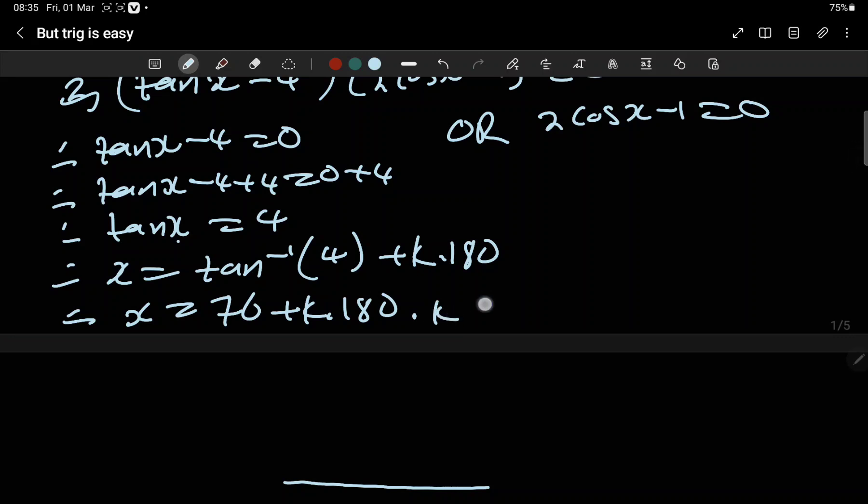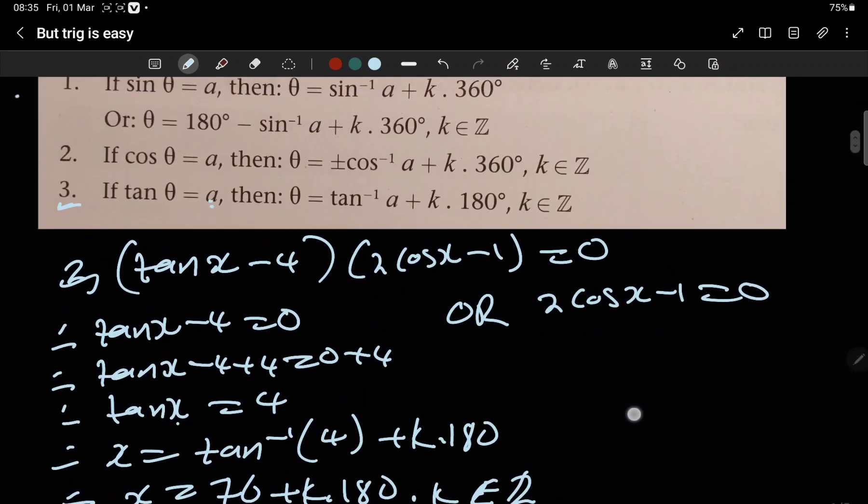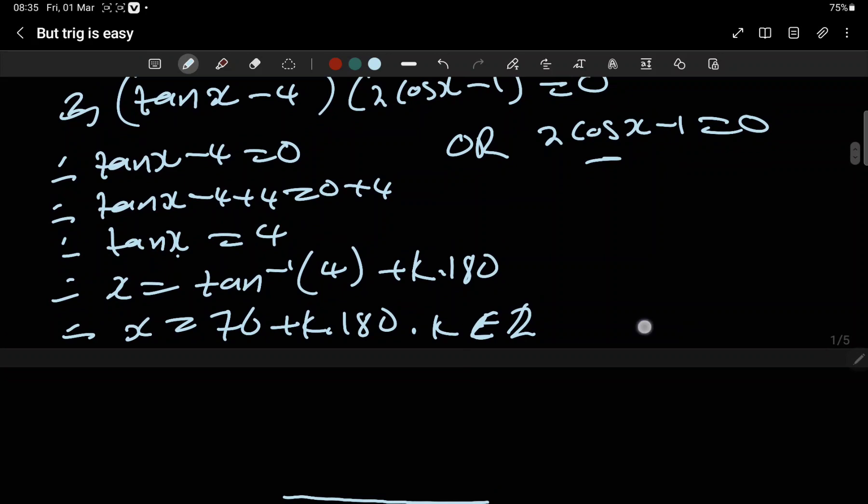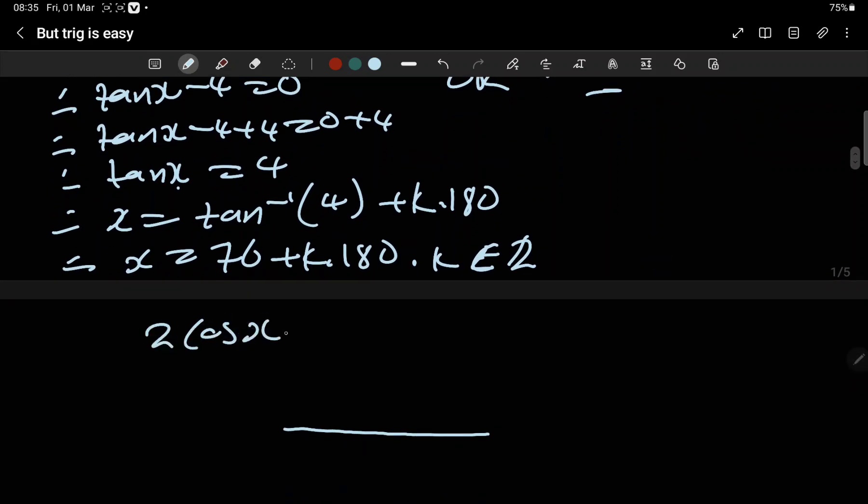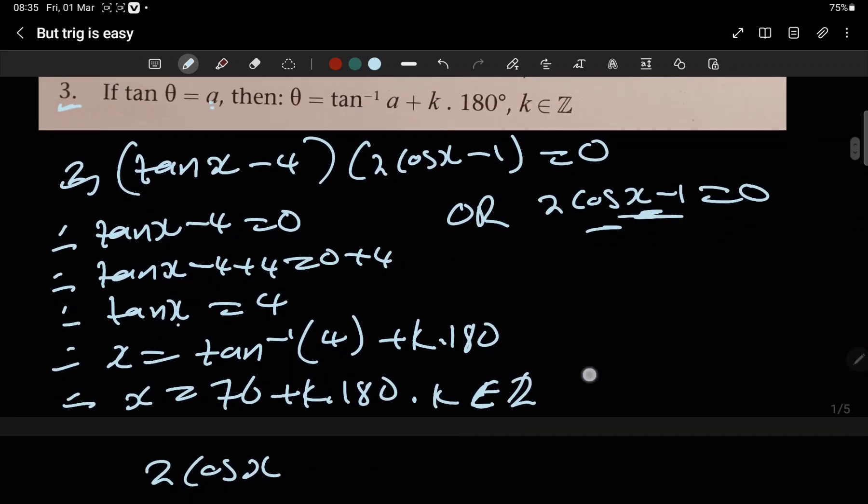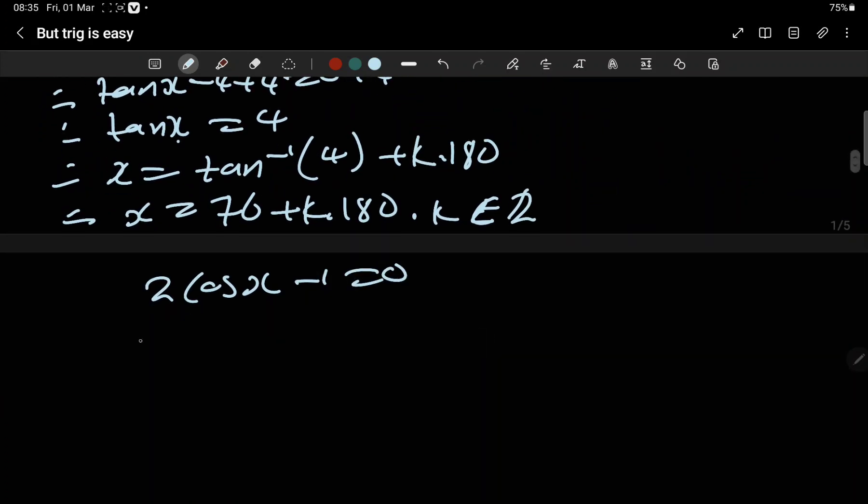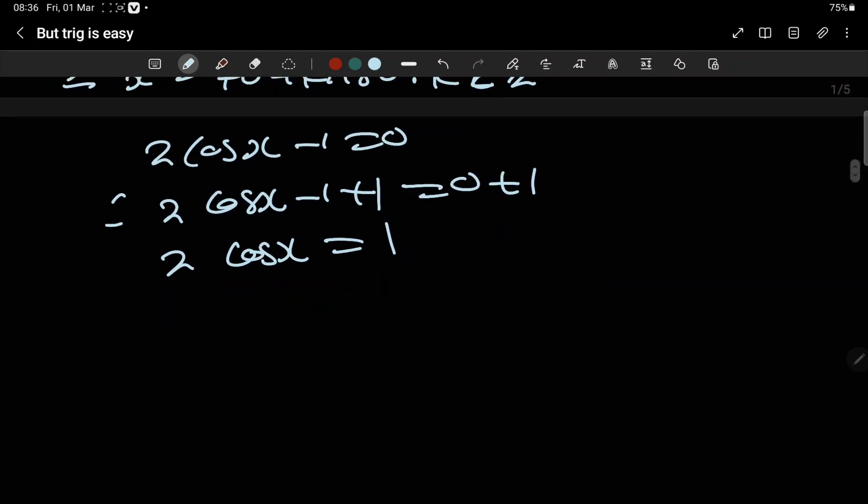Then this part—I don't have space, so let's take two cos(x) minus one equals zero. Therefore, this is two cos(x) minus one plus one equals zero plus one. Add one to both sides: two cos(x) equals one.